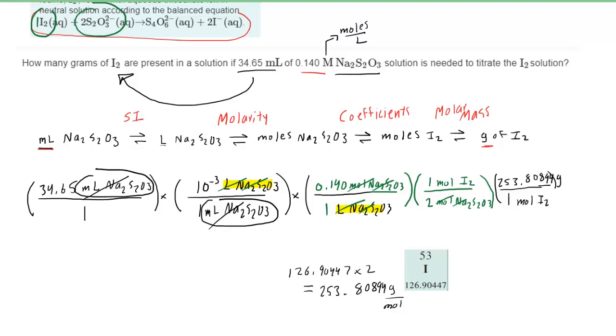Notice again the way in which we have aligned the conversion. The moles of iodine are in the numerator in the first quantity, and then the moles of iodine are in the denominator of the second one. This way, they cancel out, and that leaves us with grams of iodine.